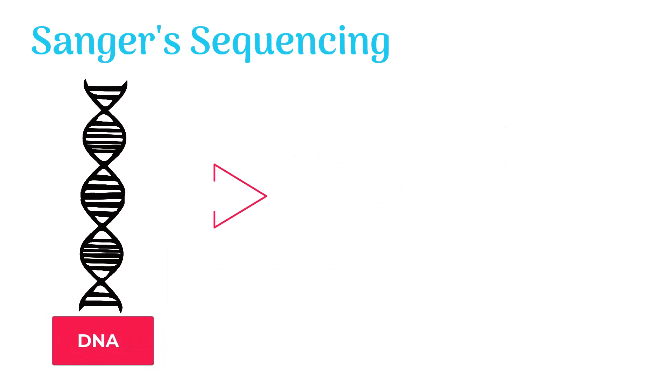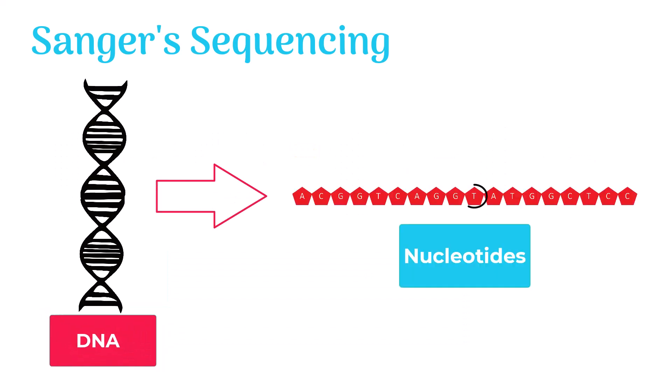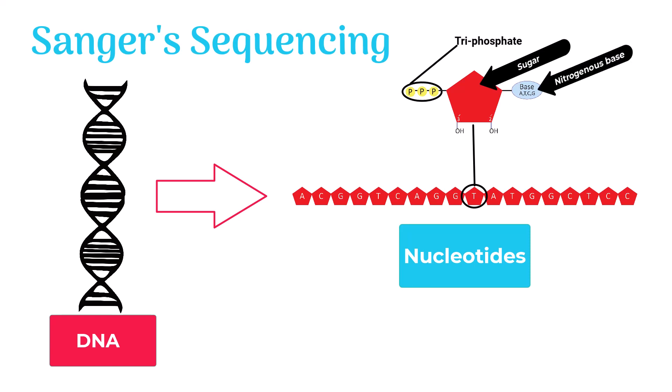DNA is mainly made of tiny building blocks called nucleotides. A nucleotide has sugars to which nitrogenous base and three phosphate groups called triphosphate are attached.